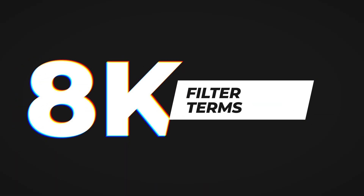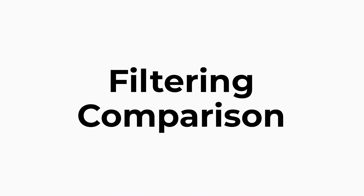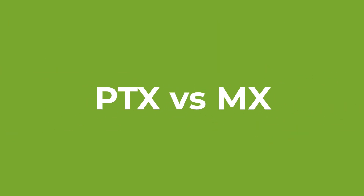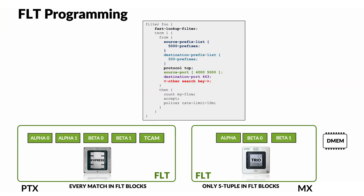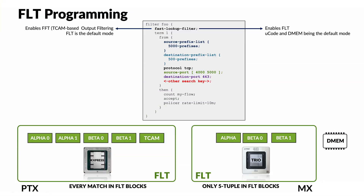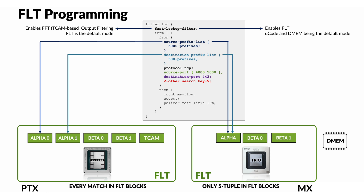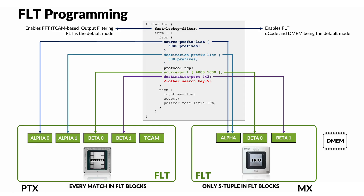Additionally, a recent software upgrade now supports filters with up to 8 cutters. We don't program the same object in the same block. On Express, all match criteria — including the 5-tuple and extended fields — are handled directly by the FLT block. Some functional blocks, like alpha, are dedicated to fast IP lookup. In contrast, on TRIO, the FLT block only processes the 5-tuple matches, and any additional match conditions are handled in the second phase by the ASIC microcode.